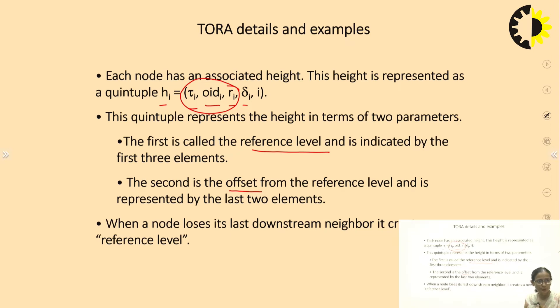In the case of the reference level, it is indicated by the first three elements and the offset from the reference level is represented by the last two elements. When a node loses its downstream neighbor, it creates a new reference level. The fluid is flowing in this direction and if it gets disconnected, ultimately it needs a new route discovery algorithm so that the data may flow.